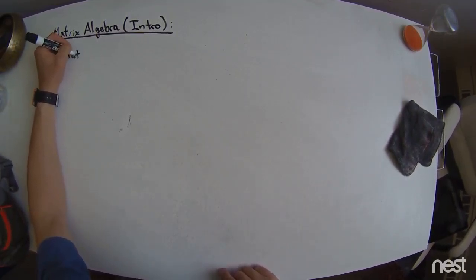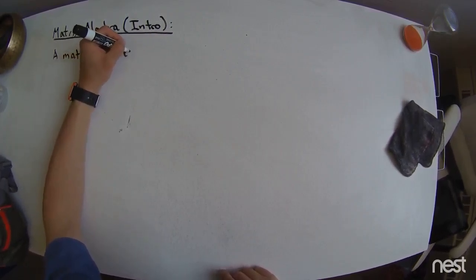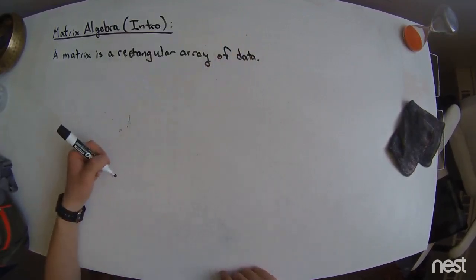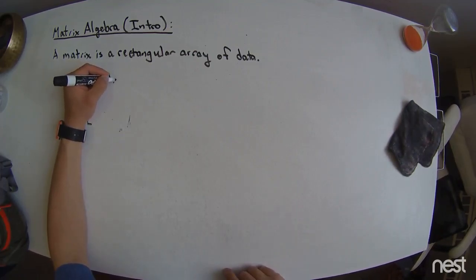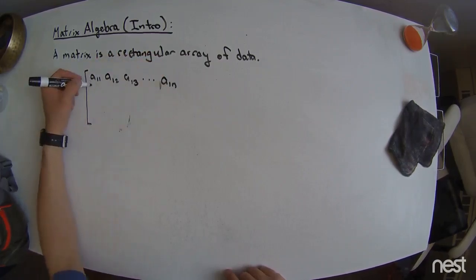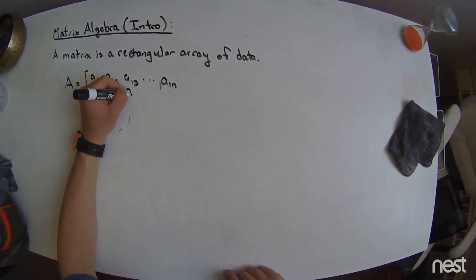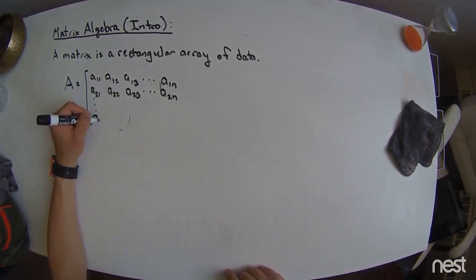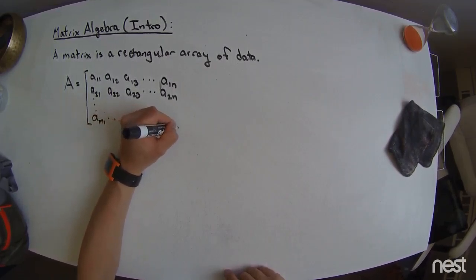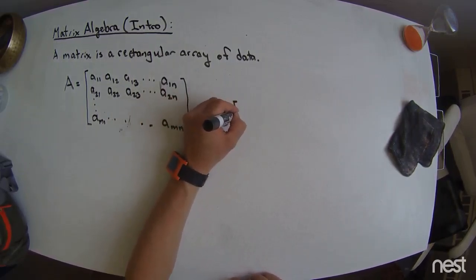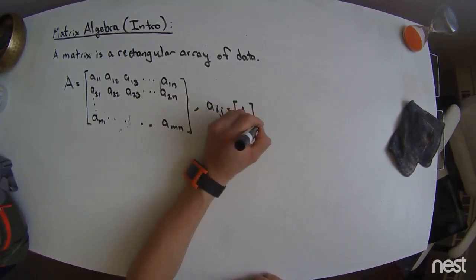So we're going to first state what a matrix is, and so a matrix is a rectangular array of data. These data could be more mathematical objects, but in our life they're just going to be real numbers. And so we'll use capital letters to denote a matrix. This matrix is going to be then populated by elements, say A11, A12, A13, all the way out to A1N, and then I get A21, A22, A23, all the way out to A2N, all the way down to AM1, and all the way over to AMN.